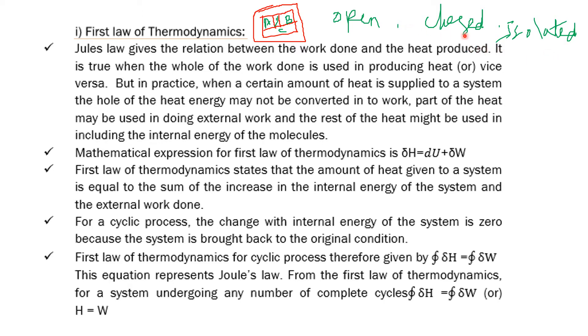The equation of state for an ideal gas is PV = RT. The concept of temperature is explained by the zeroth law of thermodynamics. PV = RT is the ideal gas equation derived from the zeroth law.